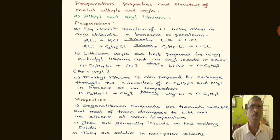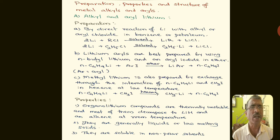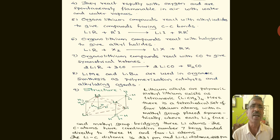Coming to the properties of organolithium compounds: organolithium compounds are thermally unstable and most of them decompose to lithium hydride and an alkene at room temperature. They are generally liquids or low melting solids. They are soluble in non-polar solvents and react rapidly with oxygen, being spontaneously flammable in air, with water and water vapors.